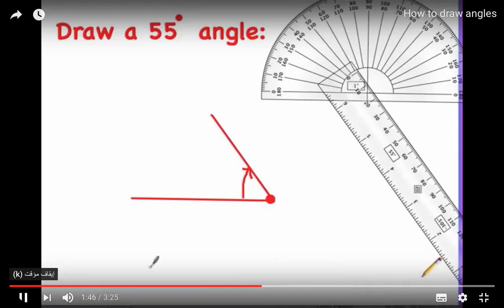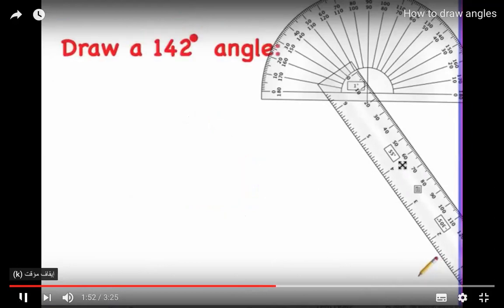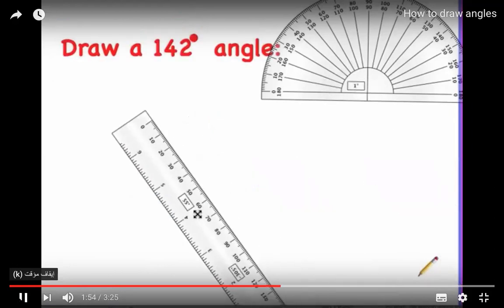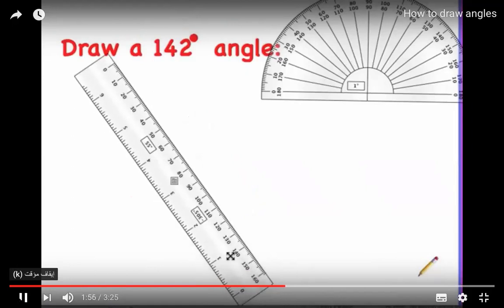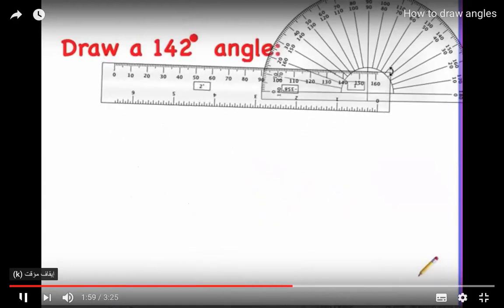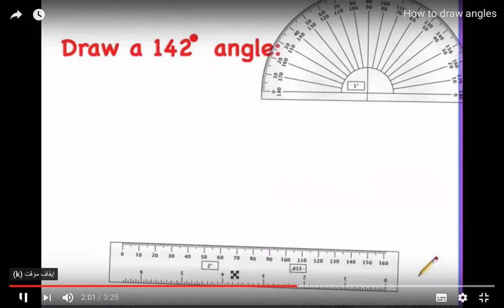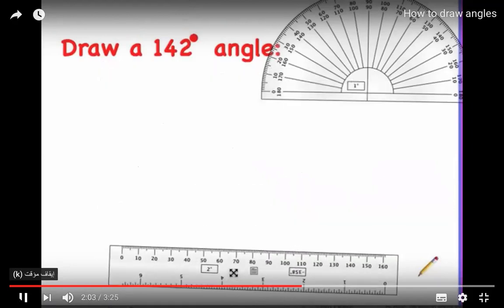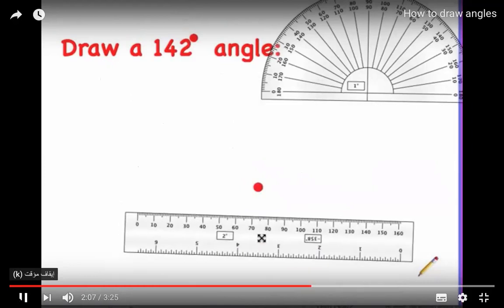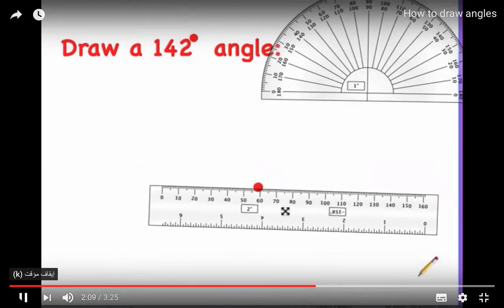Draw a line from the dot to the vertex, add a directional arrow, and you have a 55-degree angle. Now let's try the same process with an obtuse angle. First draw the vertex, then from the vertex line up the straightedge — this time we'll make the line go from the vertex to the right.